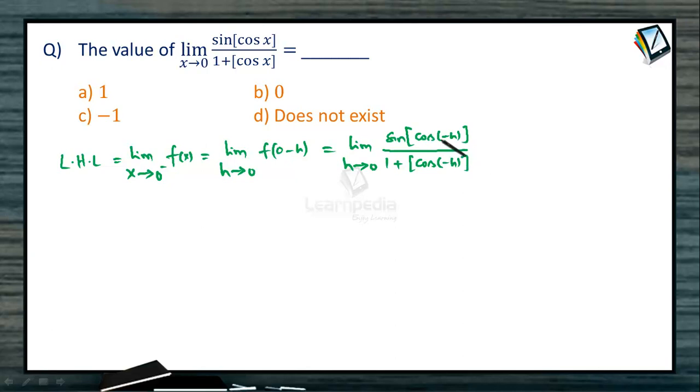Now, as cos(-θ) = cos θ, this becomes lim(h→0) sin([cos h]) / (1 + [cos h]).